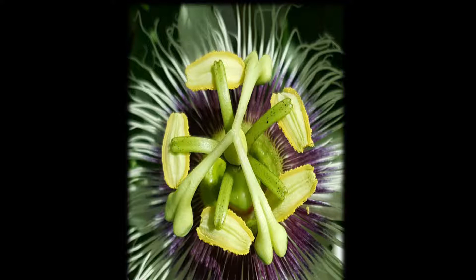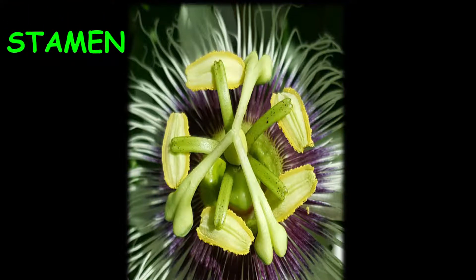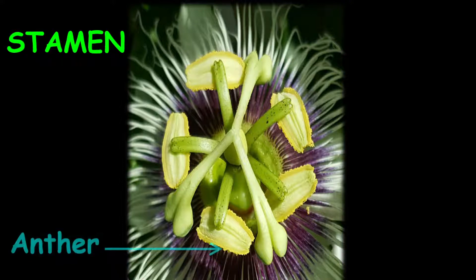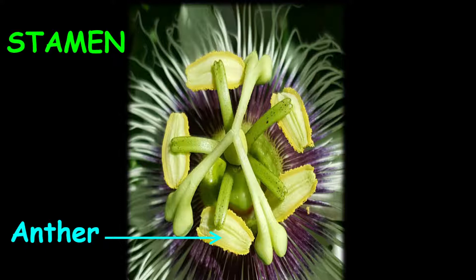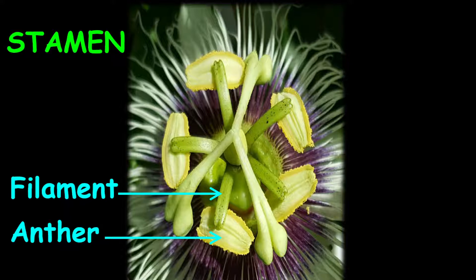So the flower, we have a part that is called the stamen, which is the male part of the flower. We have the anther, we have the filament, and both the anther and the filament make up the male part of the flower.